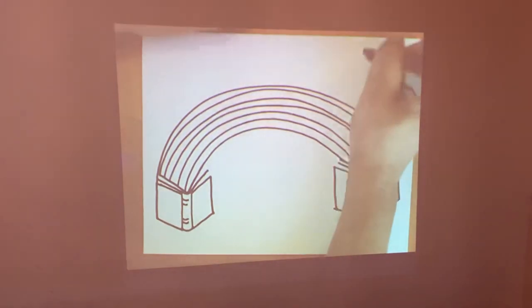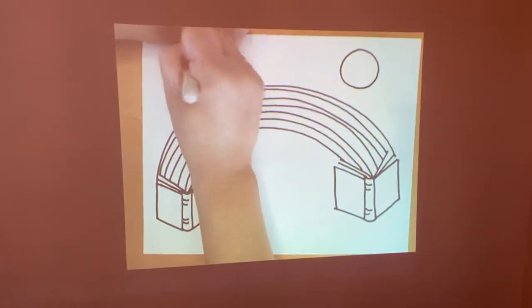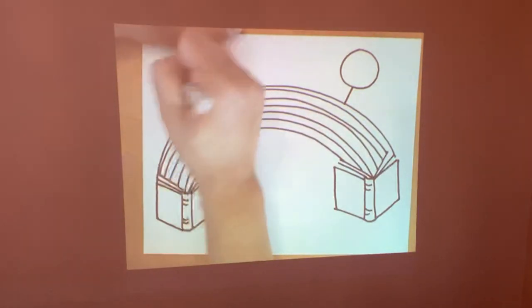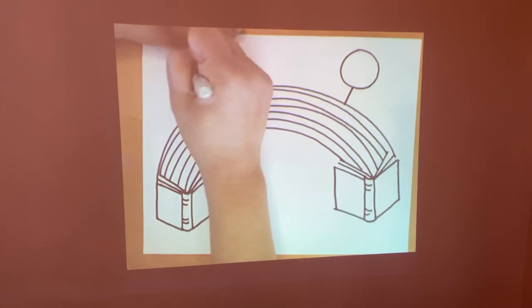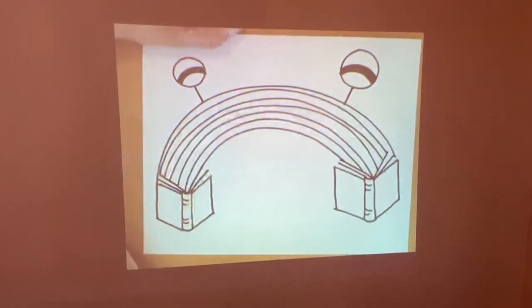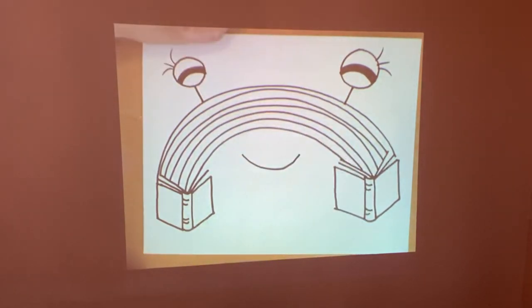So let's add one big eye and the smaller one. Then connect the eyeballs to the rainbow. Let's make the eyes kind of looking down as if it's reading. So draw two curved lines, then fill them in. I'm going to make this a girl rainbow book. I'm going to add some lashes. A big smile, then two details. One, the big letter M and the small W.